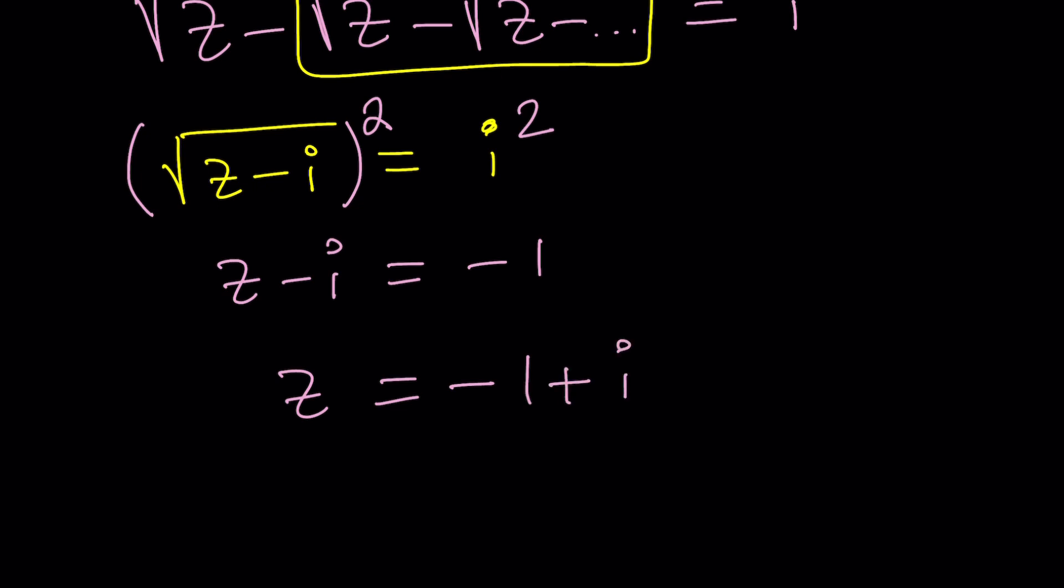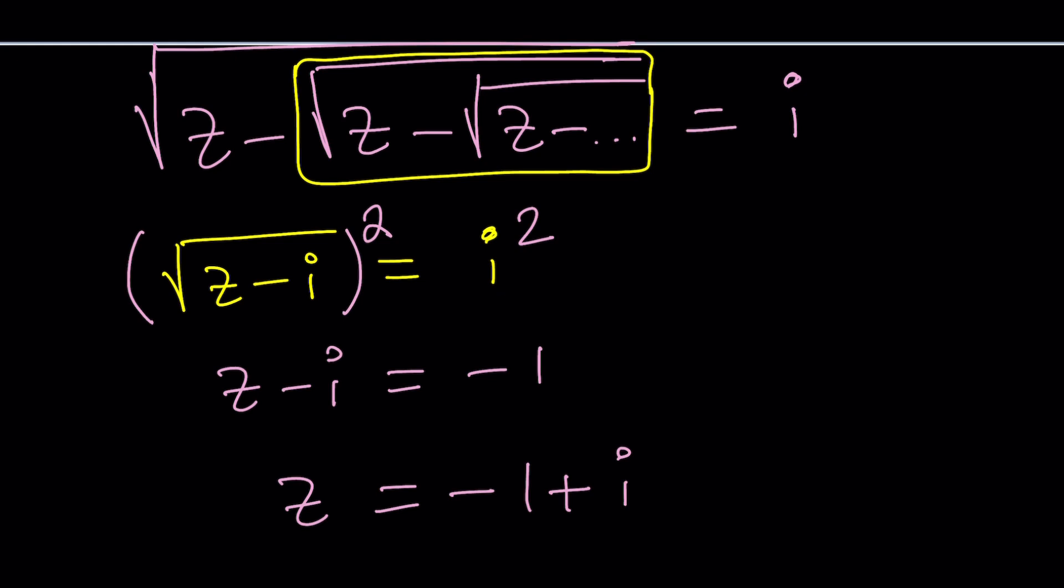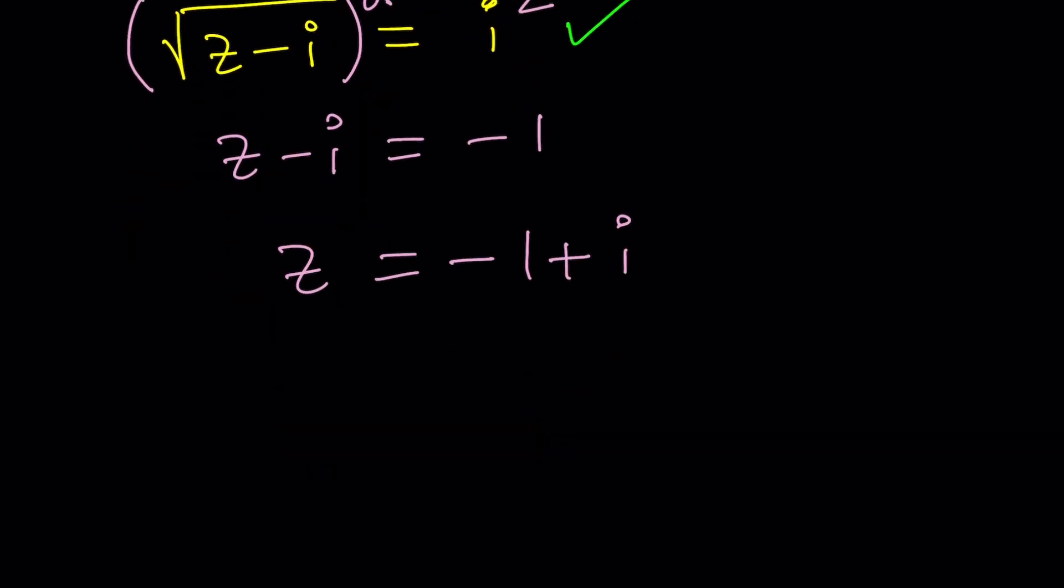Now, let's think about it. Does this really satisfy the original equation? Well, the original, not the original original, but the somewhat original. The second original, which is this one, right? So we have square root of z minus i equals i.